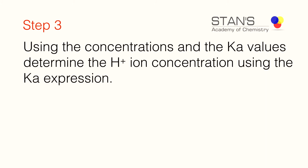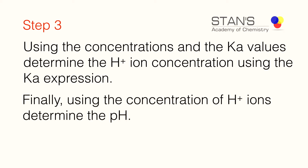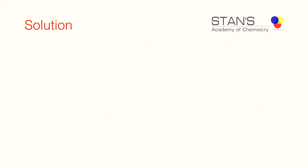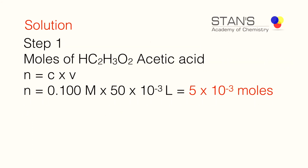In step three, we will use the dissociation constant Ka for the weak acid to determine the hydrogen ion concentration, substituting the value 1.8 × 10⁻⁵. Finally, using this hydrogen ion concentration we can determine the pH of the given solution. That is the objective, so let's get started.